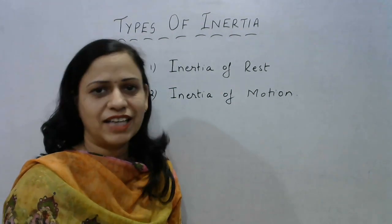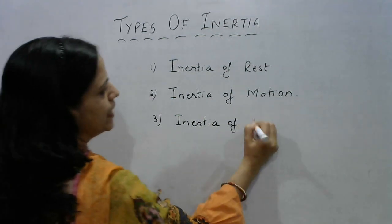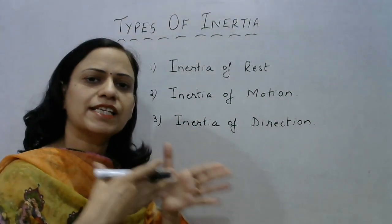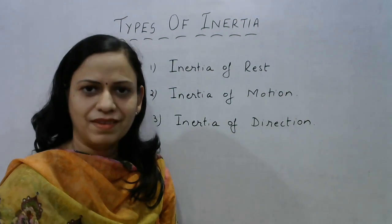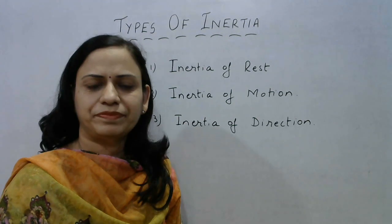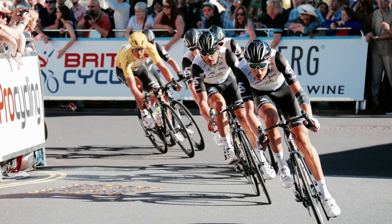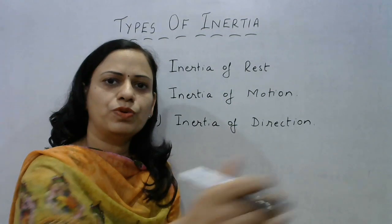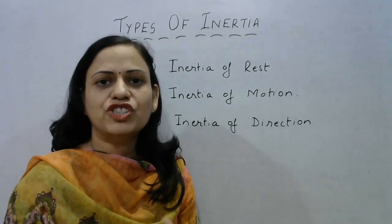Now let us talk about the third type — inertia of direction. The tendency of an object to resist a change in its direction of motion means that whenever an object is moving in a particular direction, it tends to keep moving in the same direction and will not like to change it. For example, when cycling or riding a two-wheeler around a roundabout or taking a turn, we always bend outwards. This happens because our body was moving in a particular direction and resists the change in direction — that is inertia of direction.